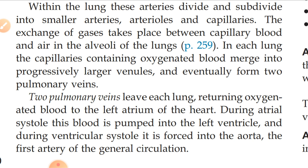This oxygenated blood is pumped into the left ventricle, and during ventricular systole it is forced into the aorta, the first artery of the general circulation. There are two pulmonary veins — one from the right and one from the left lung — and both carry oxygenated blood to enter the left atrium of the heart.